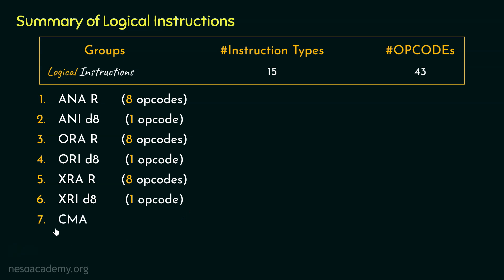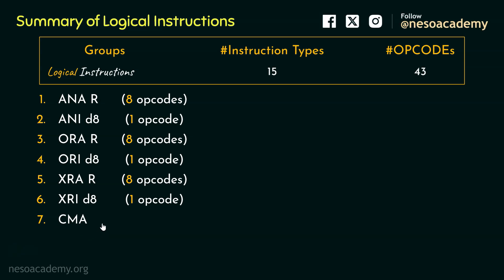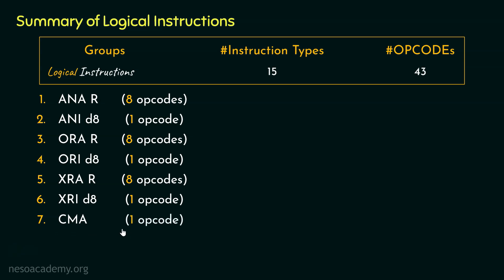The next type is CMA — complement the content of the accumulator. We can directly complement the accumulator's contents using this instruction. Since the accumulator is a special purpose register, we can only complement its contents, not any general purpose register. So for CMA there is only a single opcode. The next instruction was CMC, and for this we also have a single opcode.